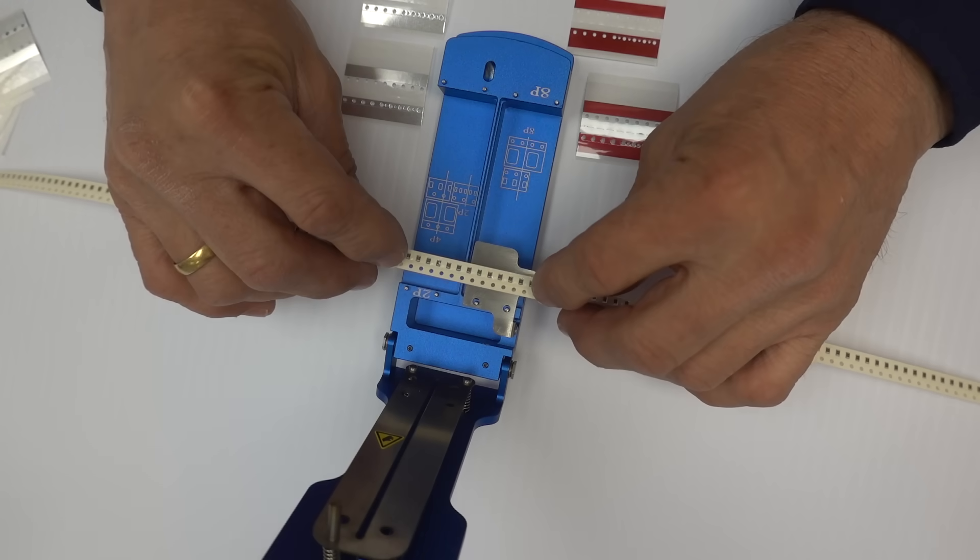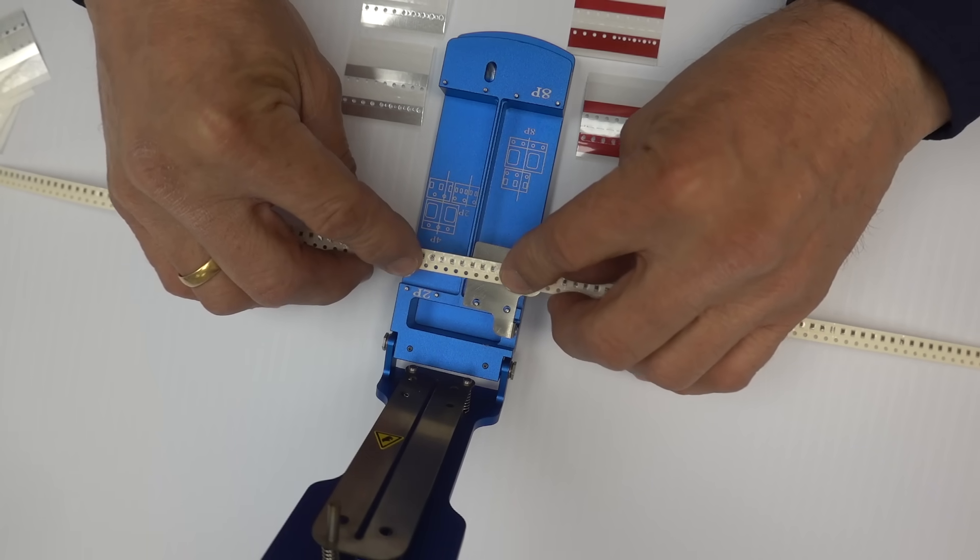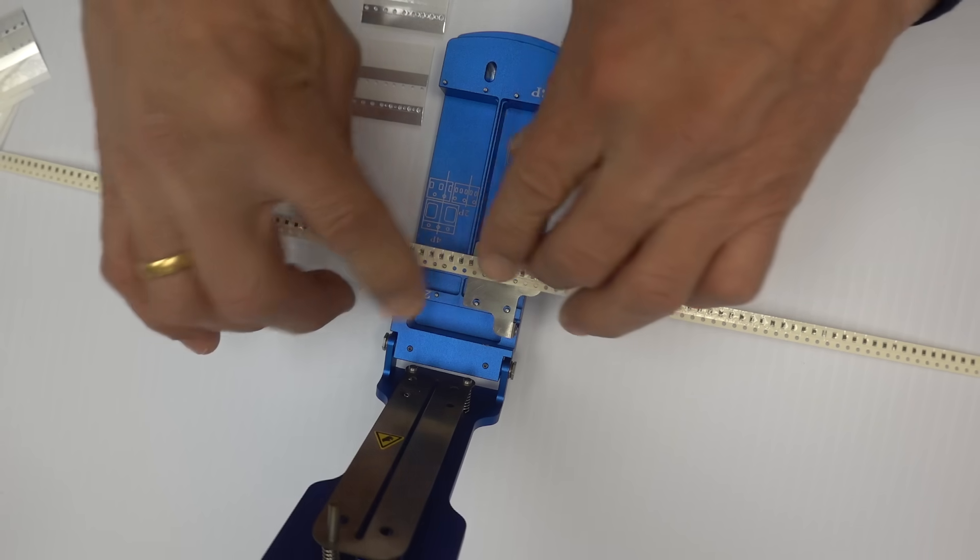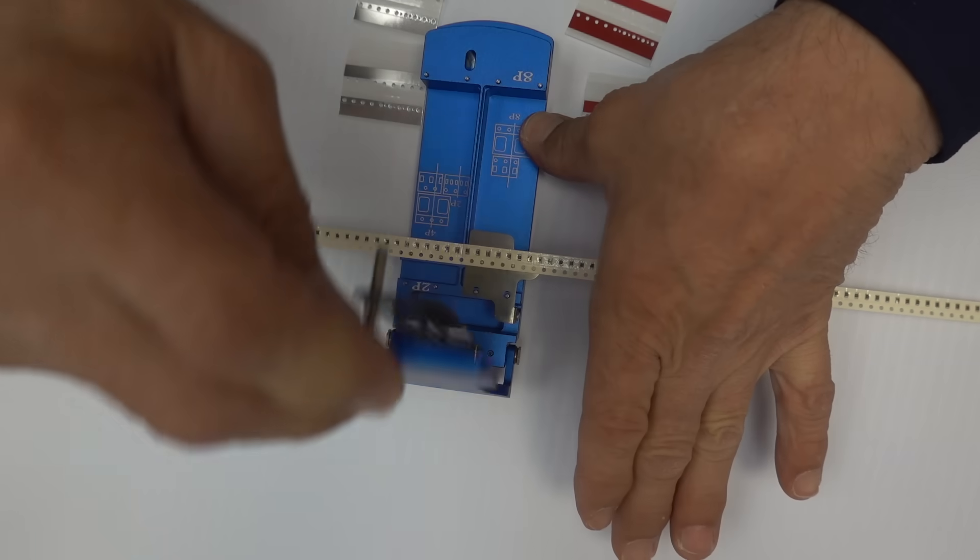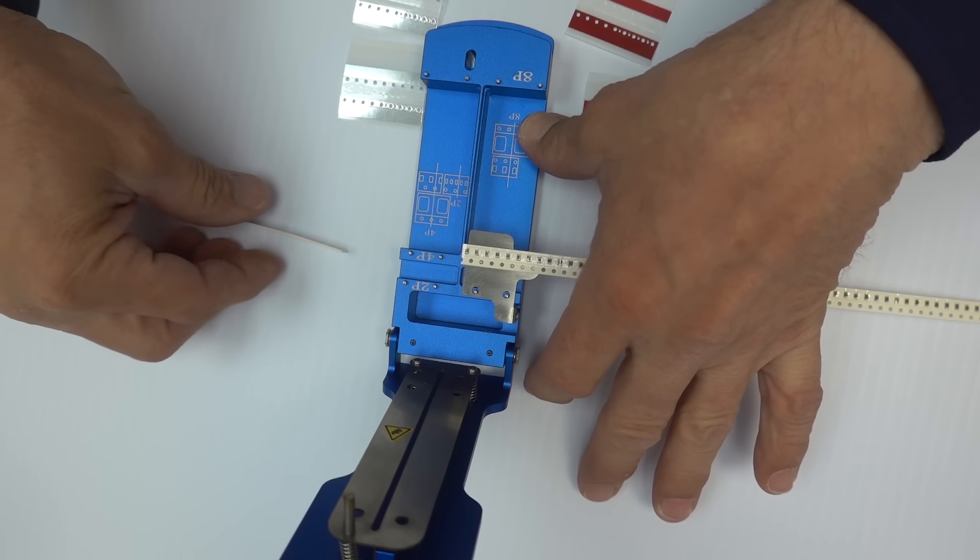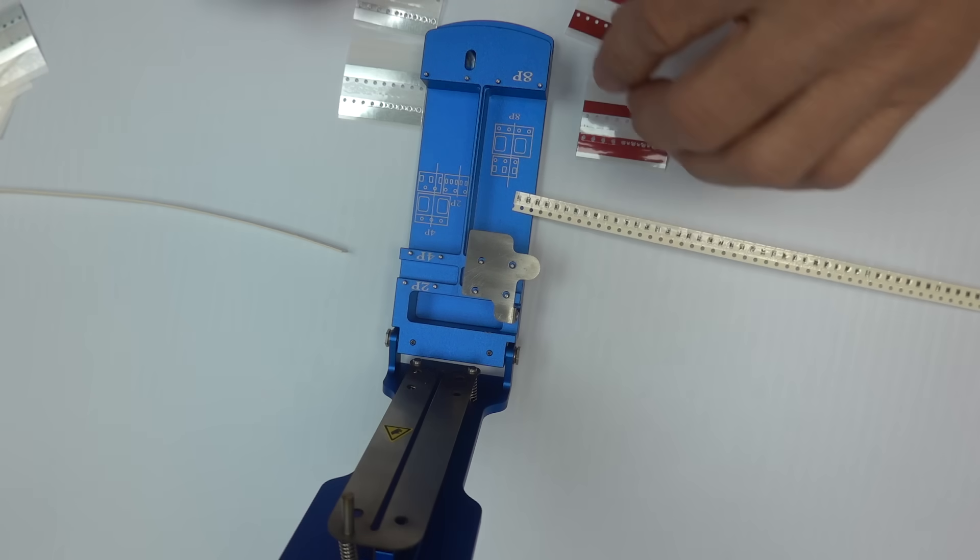First thing we're going to do is we're going to cut the carrier tape, open it up, and set the two pieces down.